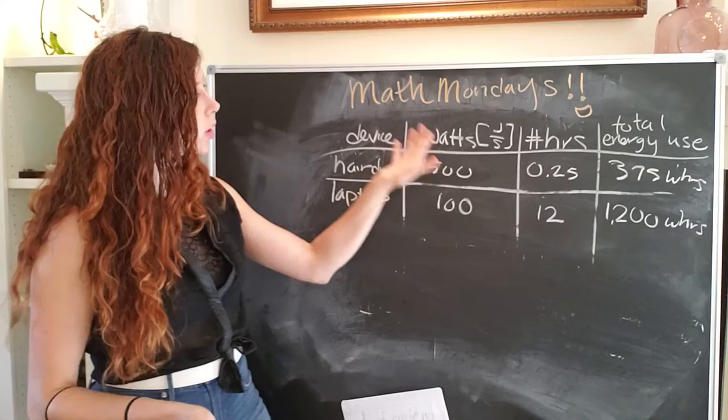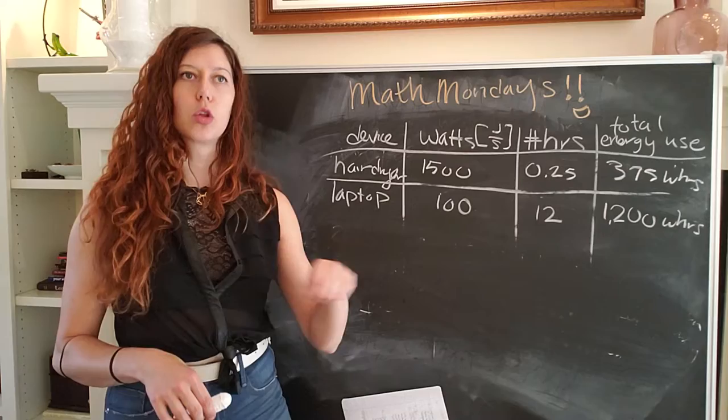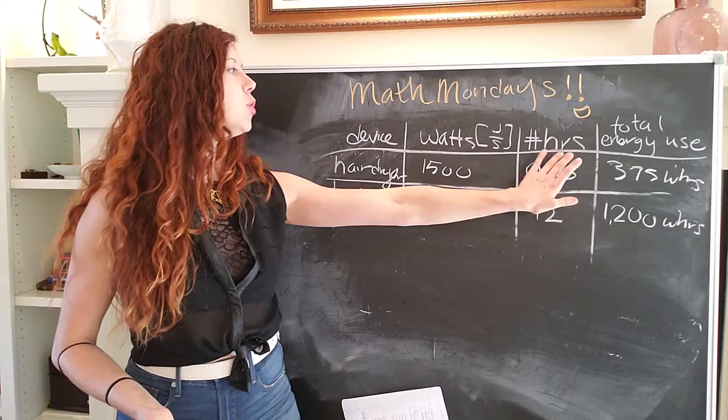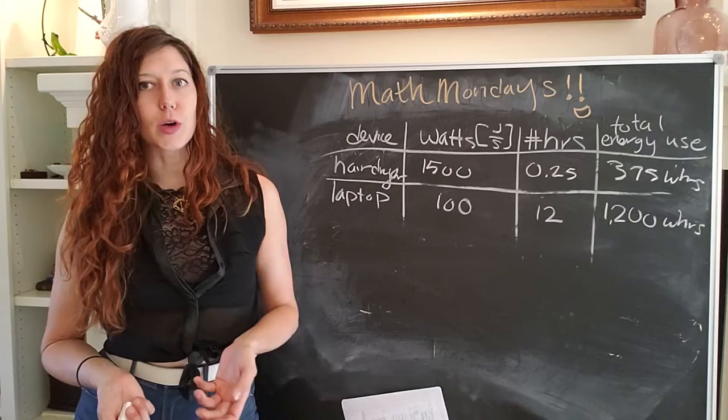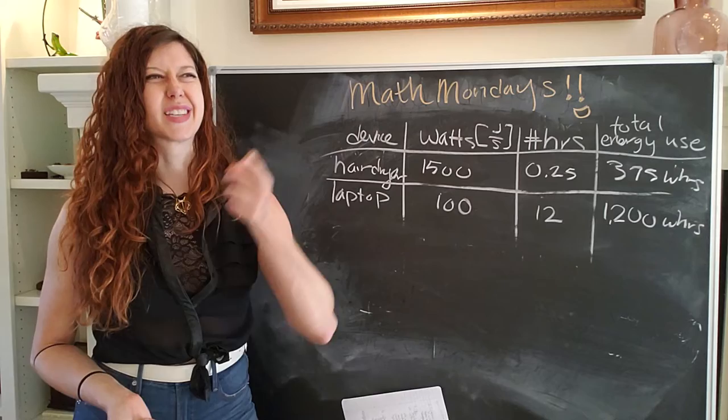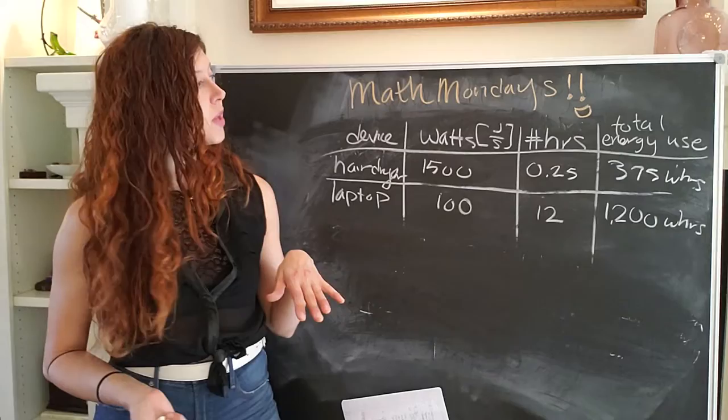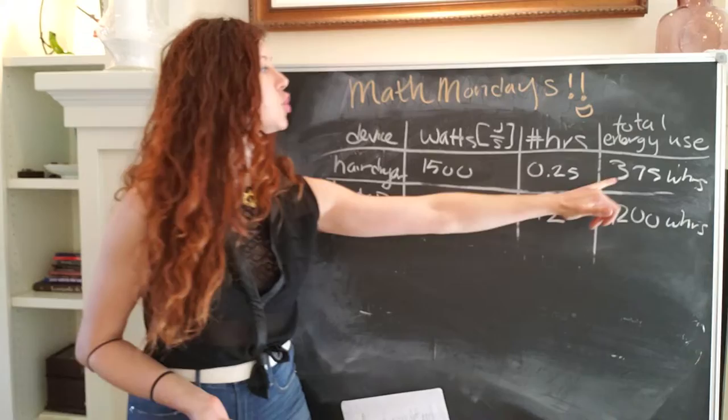And you would put it in a table just like this. You can find the wattage of the device either by looking at the plug. There's usually a tag on the plug that tells you how much power that device consumes, or you can look it up on your favorite search engine. And then you estimate the number of hours that that device is being used. For example, your refrigerator is probably plugged in for 24 hours a day. Although, quick note that refrigerators cycle. So the rule of thumb is to divide 24 hours by three to get the total number of hours that the refrigerator is on because it cycles. And then you multiply the power consumption by the number of hours that it's on to get the total energy use.